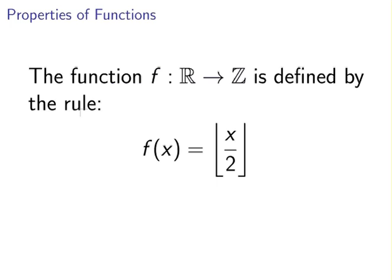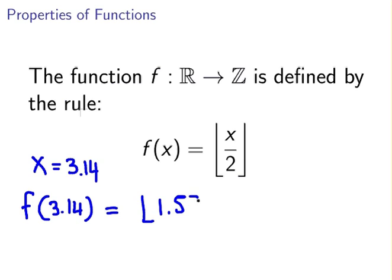Let's look at the first example here. This is the floor function of x divided by 2. Let's evaluate that for pi, 3.14. So with x equal to 3.14, the function evaluates as the floor of 1.57, that's 3.14 divided by 2, and that would evaluate as 1.